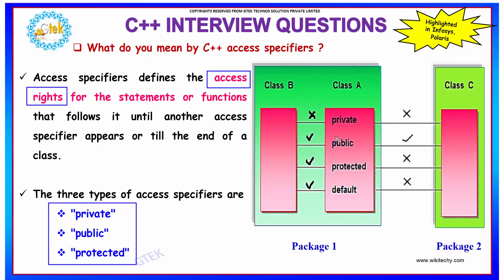Access specifiers mention the access rights for the statements and functions of one class until another access specifier appears or till the end of the class. The elements of class B that are declared to be private cannot be shared by class A or class C, whereas if it is public then it can be shared by A and C.